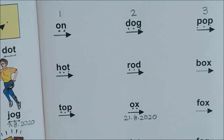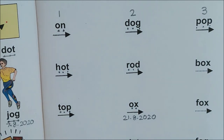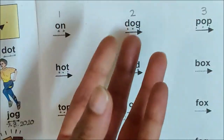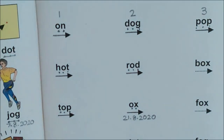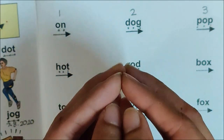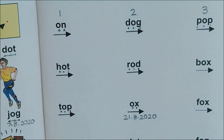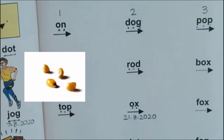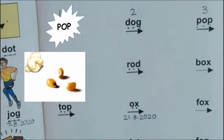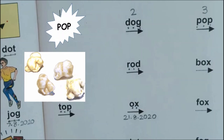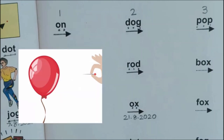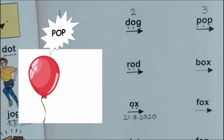Pop. Children, what does pop mean? When you prepare popcorn, they pop. Pop. Pop. Pop. And when you prick a balloon, it also pops. See children, the popcorns are popping. And when you prick a balloon, it pops.